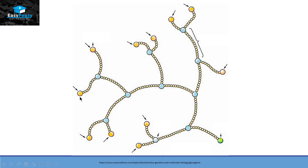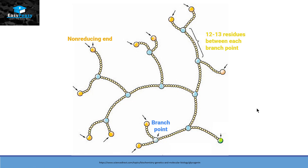If we look more closely at this polymer, we need to keep certain things in mind when the process is discussed. The first thing is the glucose present at the end of each branch — in this picture they are represented by a bigger orange circle. These are called non-reducing end glucose molecules. Then we have blue circles representing the branch points, after which you can see the branching of glucose chains occurring. These chains have almost 12 to 13 residues between each branch point, so they are highly organized.